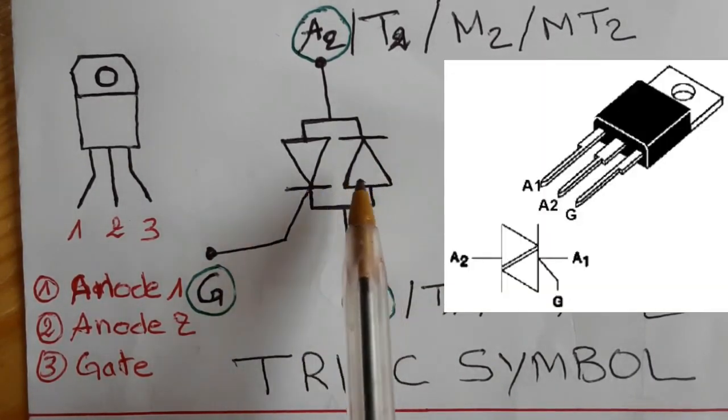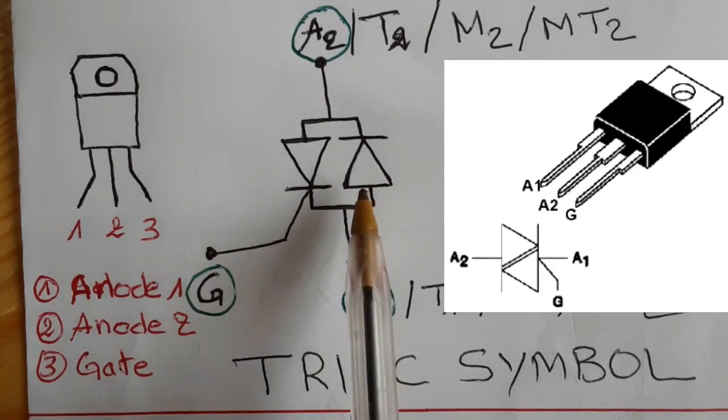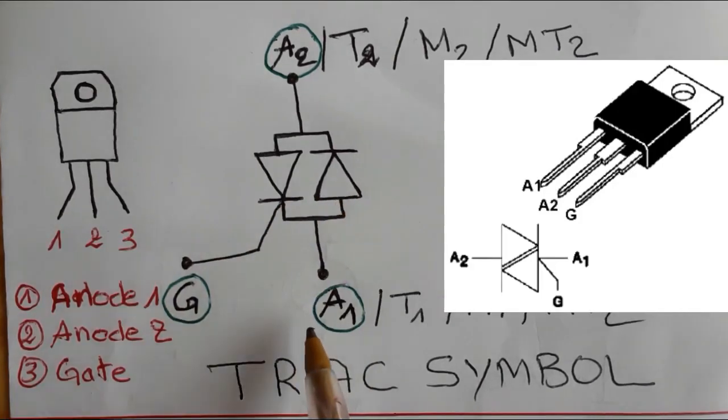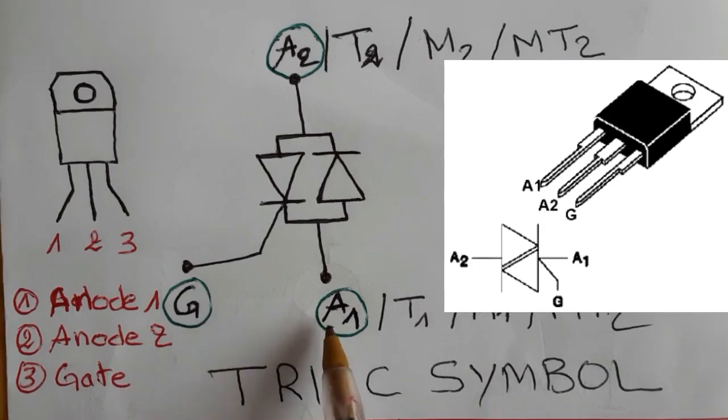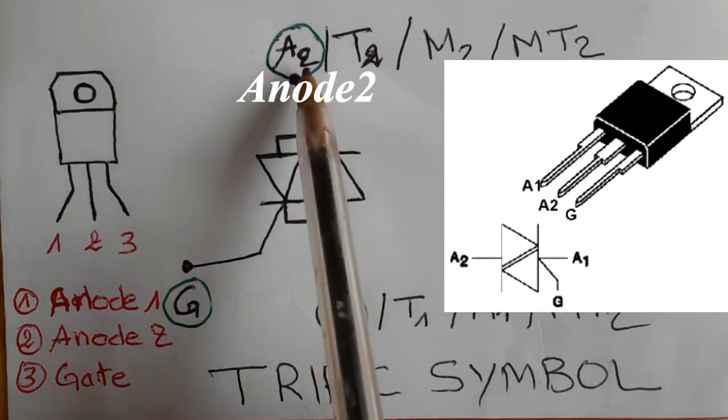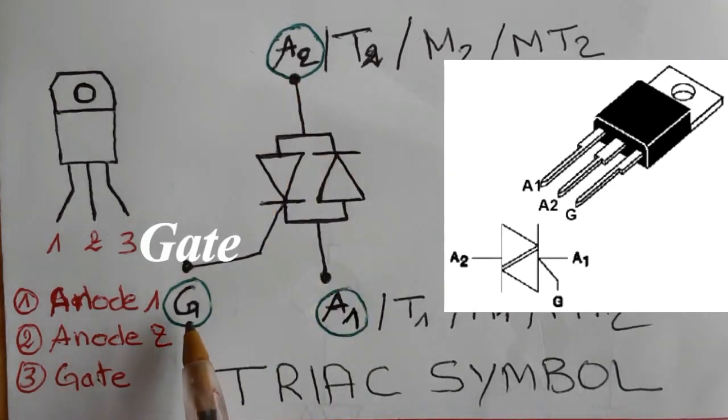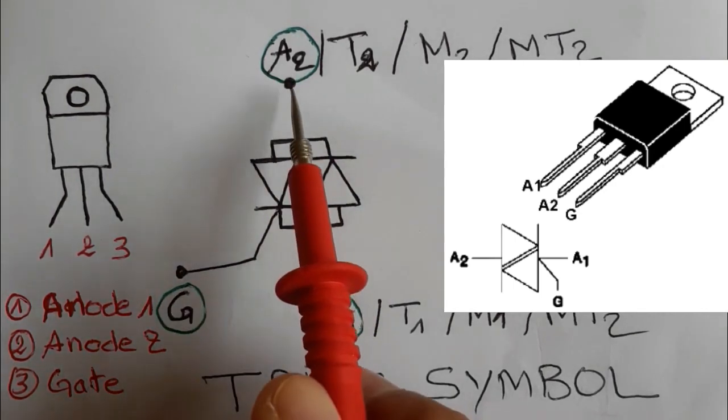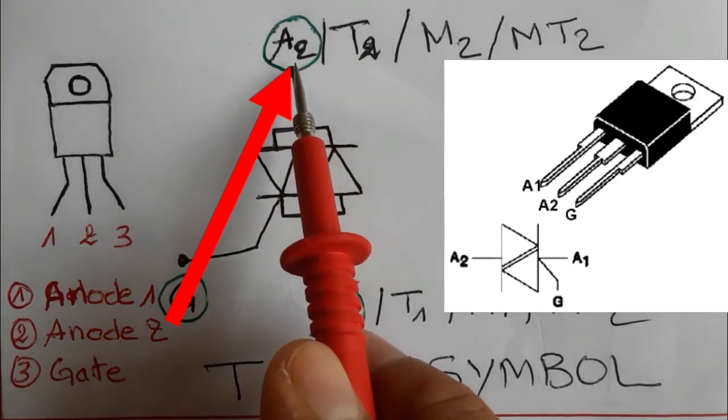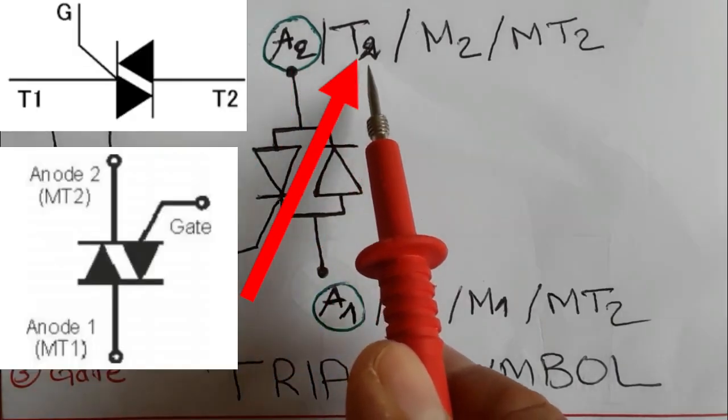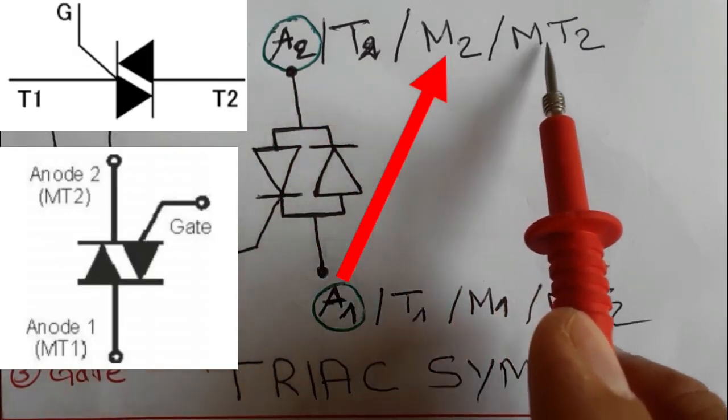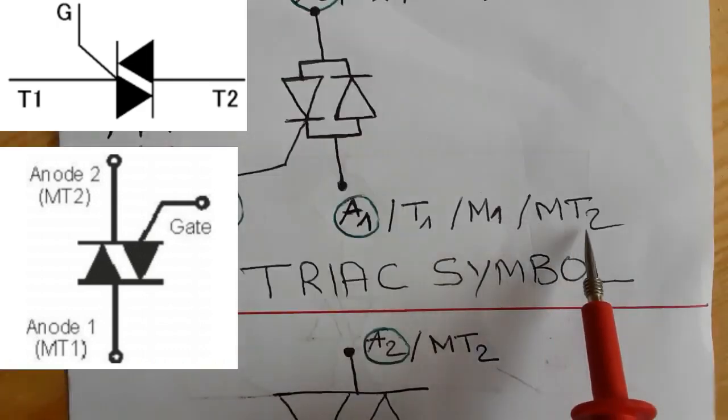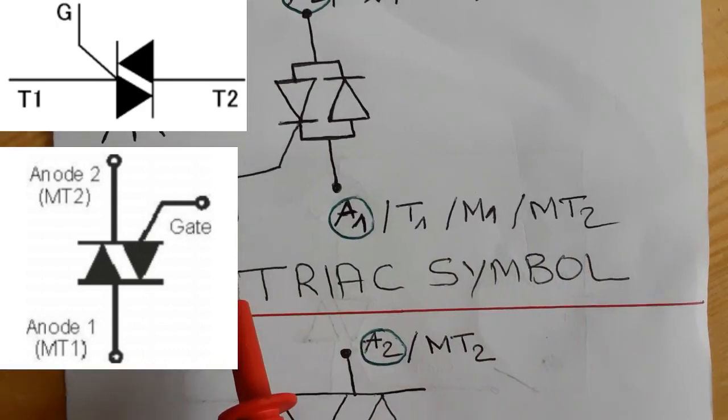Okay, as you can see, this is the symbol of the TRIAC. It contains two diodes and three terminals. So, anode one, anode two, and the gate. Of course, you can find anode two or T2 or M2 or MT2. All these names mean the same thing.